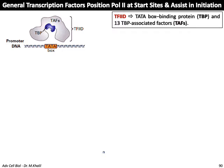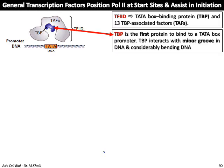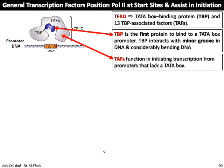Transcription in eukaryotes is more complicated than in prokaryotes. General transcription factors are needed to position RNA polymerase II at the start site and assist initiation. Transcription factor TF2D, which consists of the TATA-box binding protein TBP and 13 TBP-associated protein factors called TAFs, forms a complex that locates the TATA box on the promoter of the DNA. TBP is the first protein to bind to the TATA box promoter; it interacts with the minor groove of DNA. The TAFs function in initiating transcription from promoters that lack a TATA box.